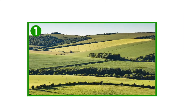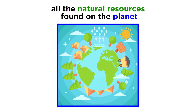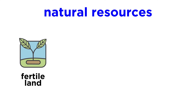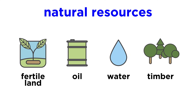First, you need land. When economists talk about land, they are talking about all of the natural resources found on the planet to help make goods or provide services. This could be fertile land for farming, but it could also be oil that comes from deep underground, or water from a river, or timber from forests.